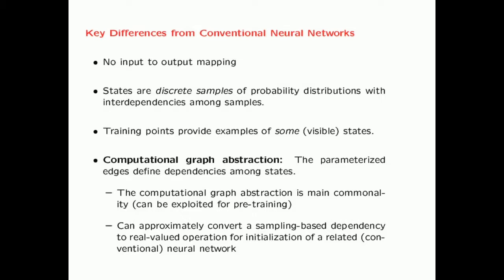All the states are drawn as discrete samples satisfying these interdependencies. The training data typically provides examples of some of these states, which are referred to as visible because they are visible to the end user. In the restricted Boltzmann machine, we do have a computational graph abstraction like a conventional neural network. The parameterized edges—the weights on those edges—define the nature of these dependencies, and this use of the computational graph abstraction is its main commonality with conventional neural networks.